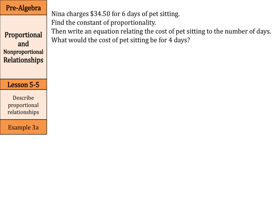Nina charges $34.50 for six days of pet sitting. Find the constant of proportionality, then write an equation relating the cost of pet sitting to the number of days. Then finally, what would be the cost of pet sitting for four days? First, let's set up our variables. C is going to equal our total cost, and D is going to equal our number of days. What we know is it's $34.50 for six days. What we need to do is find the cost for one day.